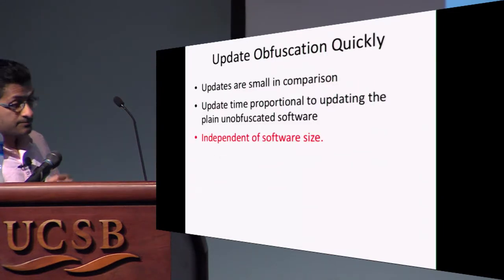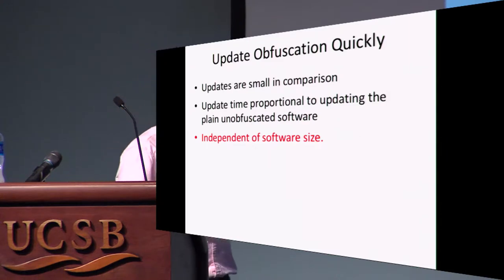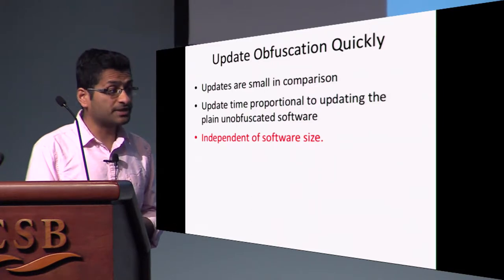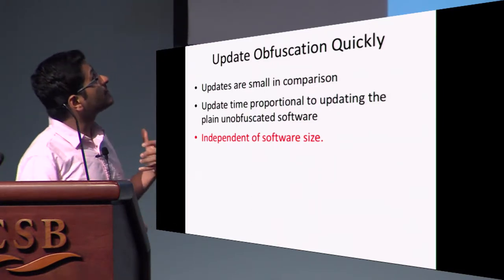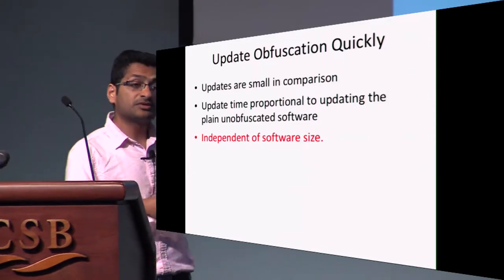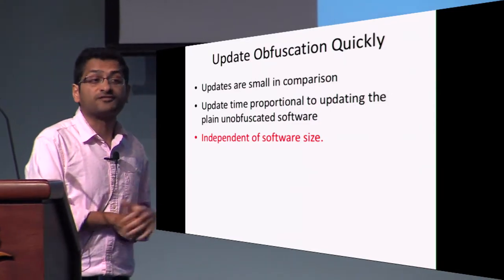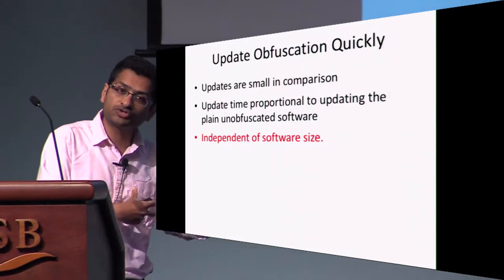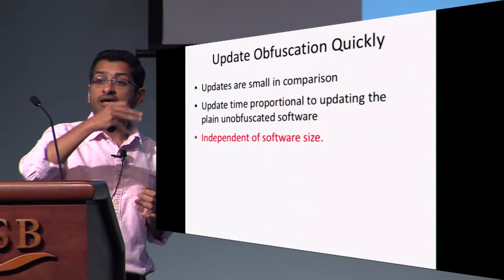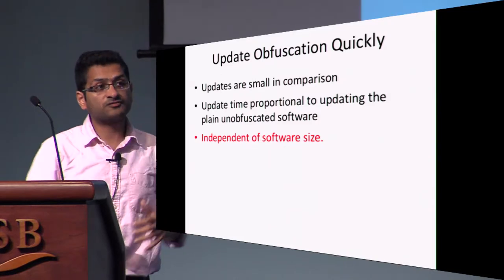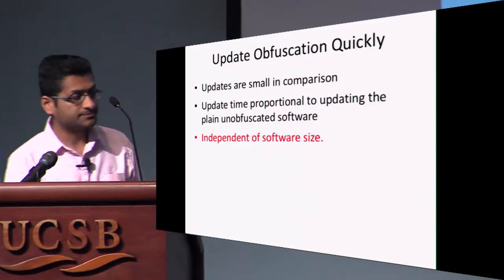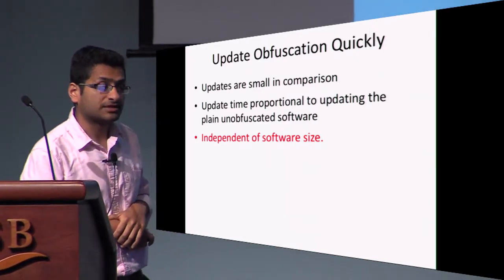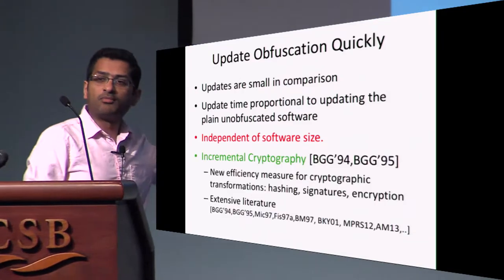In particular, the updates are typically small — much smaller than the size of the program being updated. We want the update time to be proportional to the time it takes to update the un-obfuscated program, in both the communication and computational cost. The work of the updater should be small, the communication should be small, and the time you spend updating the obfuscated software on your local end should be small — and especially, we want this to be independent of the program size.